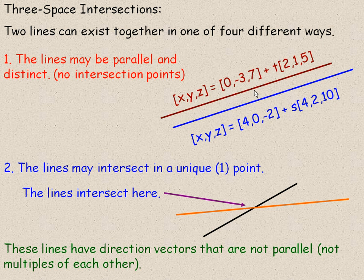A way to be guaranteed that two lines are parallel and distinct is you could actually find the vector that goes from 0, negative 3, 7 to 4, 0, negative 2. And if the lines are parallel and distinct, then that vector should not be parallel to either 2, 1, 5 or 4, 2, 10. And actually, let's do that. So let's say that that is 0, negative 3, 7, and that is 4, 0, negative 2. If the lines are not parallel, then that vector should not be parallel to the two lines.